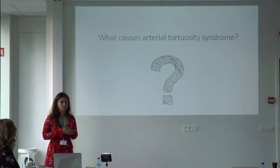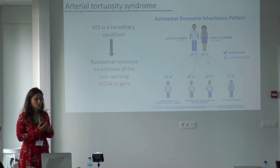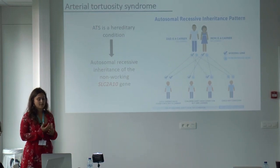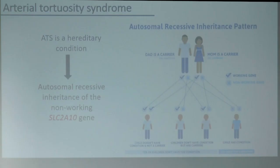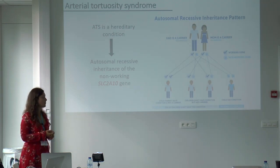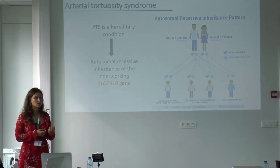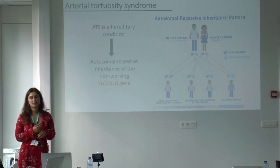What exactly causes arterial tortuosity syndrome? We know that it is a hereditary condition inherited from your parents. ATS is an autosomal recessive inheritance of the non-working SLC2A10 gene. Every person has two copies of every gene in their body. For autosomal recessive inheritance, parents have one working copy and one non-working copy — we call those people carriers. When they have children, there is a 25% chance of having a child with the condition, 50% chance of carriers, and 25% chance the child has two healthy copies and is unaffected.